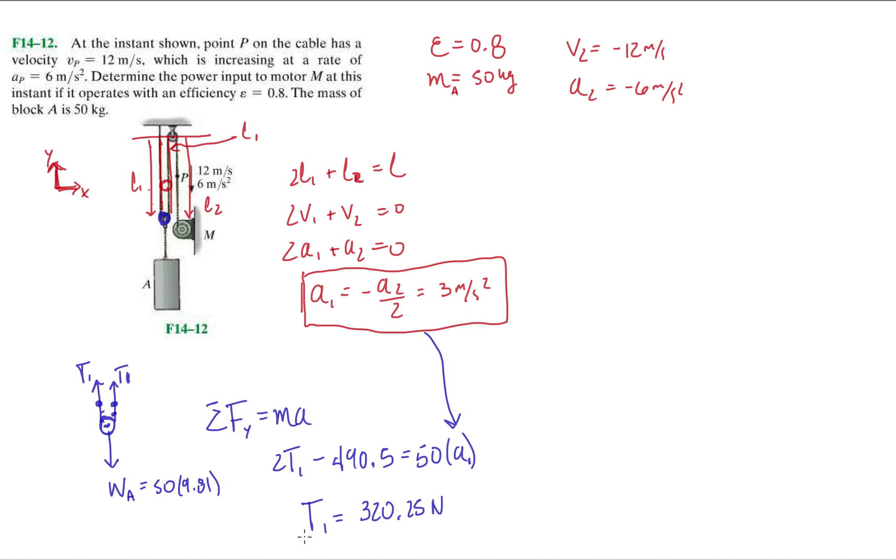What does that mean? If we have the tension on this rope is 320.25 newtons, that means the tension along the entire rope, I'm going to highlight it in purple, is 320.25.